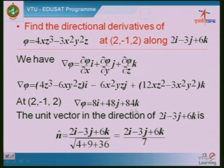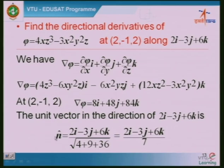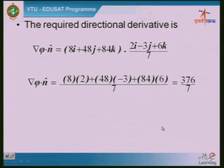Grad φ is a vector. Now find n̂ in the direction of 2i − 3j + 6k. Magnitude = √(4 + 9 + 36) = √49 = 7. So n̂ = (2i − 3j + 6k)/7. The directional derivative = grad φ · n̂ = (8·2 + 48·(−3) + 84·6) / 7. When multiplied out: 16 − 144 + 504 = 376. So the directional derivative = 376/7.